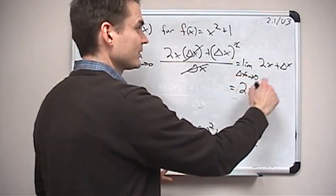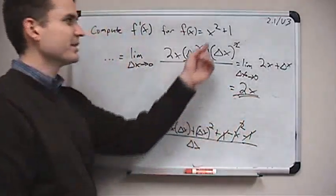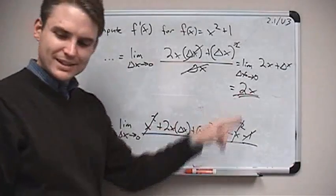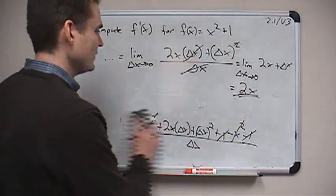Because if I do, I'll just get 2x, plus 0, well, 2x. So that is the derivative of x squared plus 1. What does that mean? That means that this is the function that tells me the slope of my original function at any point.